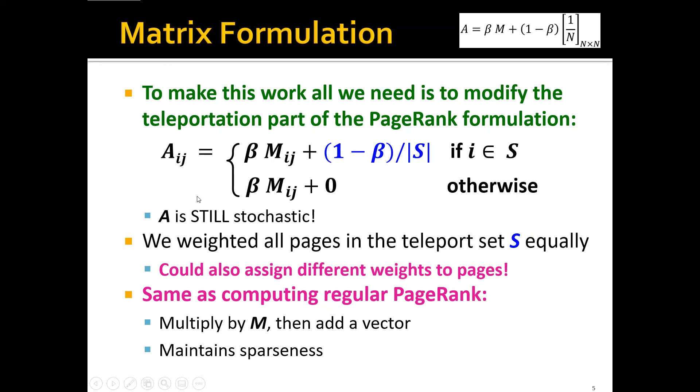And if i here is actually not in the teleport set, then we will have only one term. Remember, this is different from the standard PageRank, where we actually assign an equal weight, not equal score, to every node. It's like (1 minus beta) times 1 over N, where N is the number of total web pages. So the good thing about this new formulation is that even after computing this, A is still stochastic, so everything still works with the power iteration method.